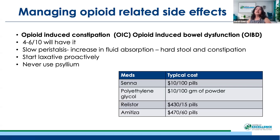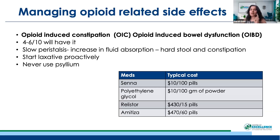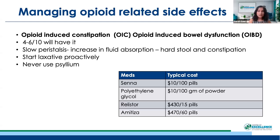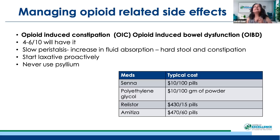Opioid-induced constipation will happen almost every time you give an opioid. If you didn't start medication for opioid-induced constipation proactively, you'll always be behind. So when you start the opioid, think about what bowel regimen to start concurrently. You will have hard stool and constipation — use laxatives proactively. Never use fiber as a laxative with opioids; it will turn into cement and you'll have a miserable patient.